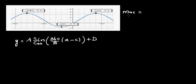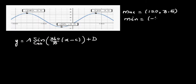So let's write the coordinates of the maximum and minimum. You can take any maximum — let's say the maximum is (120, 3.5). And the minimum is (−60, −1.5).